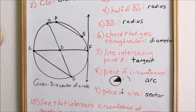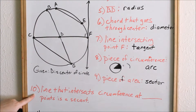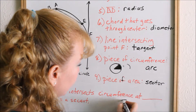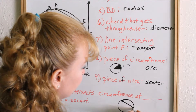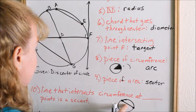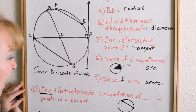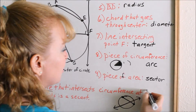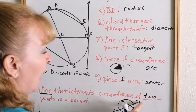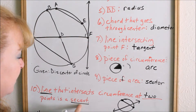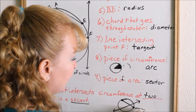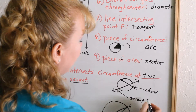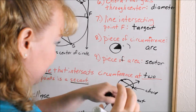Number ten: a line that intersects the circumference at two points is a secant. The main difference between a secant and a chord: a chord is a line segment, while a secant is a line. Here is a chord — a line segment. A secant is a line that touches the circumference at two points. So: line segment is a chord; line is a secant.